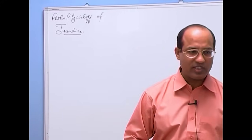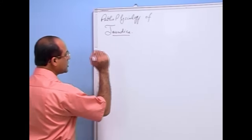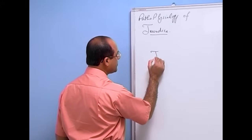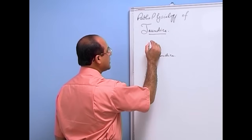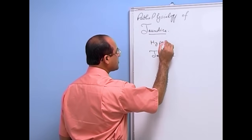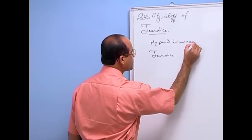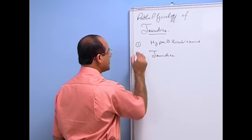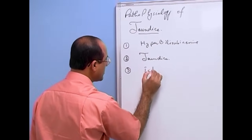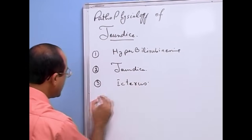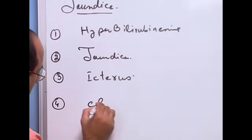Before giving new definitions, let me clarify three terms you should be clear about. Number one: jaundice. Another term is hyperbilirubinemia. Then there is icterus, and then another term is cholestasis. These are terms which should be differentiated from each other.